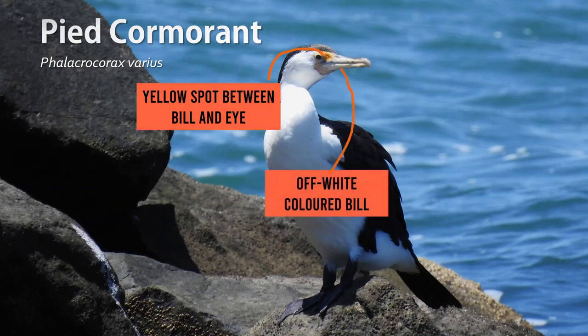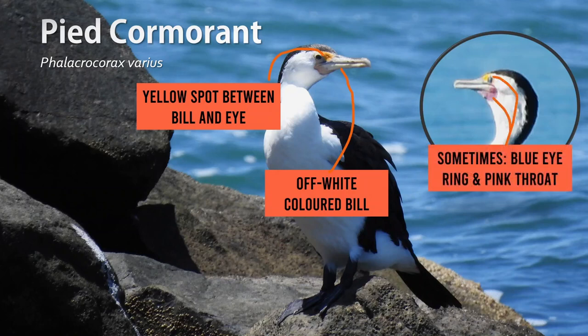Adults may sport a blue eye ring and a pink patch on the cheeks. To help us remember this later, for all species of cormorant, let's think of any colored markings on their faces as makeup.